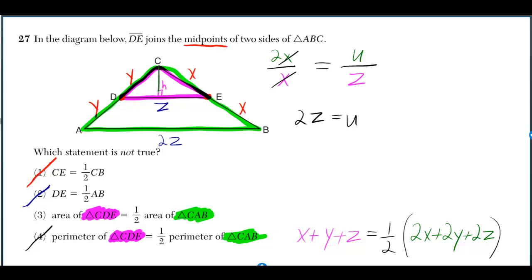The height of the pink one we could call H, and it turns out the height of the green one would be 2H. So the area of CDE would be one-half base times height, so one-half Z times H. And the area of the green one would be one-half base times height, so one-half 2Z times 2H.